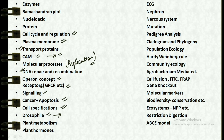Then we have plant metabolism, which covers respiration, photosynthesis and all other related topics. Next is plant hormones — auxin, cytokinin, gibberellin and all the others. Then we have ECG, that is electrocardiogram.